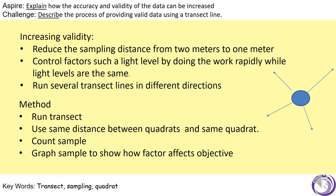Now the method — our first learning outcome. First, run a transect line along the floor. Then use the same distance between each quadrat — in my example, two meters — and use the same size quadrat, half a meter square. Count whatever sample you're looking at, in my case percentage grass cover, then graph the sample to show how the factor affects the objective. The objective here is grass cover and the factor is light level.